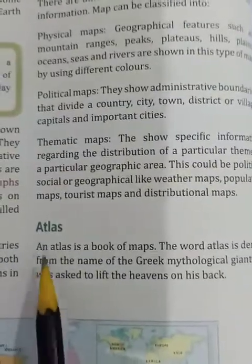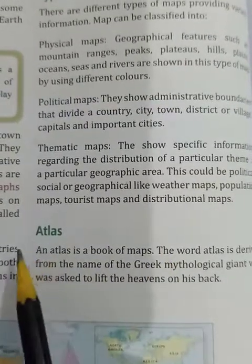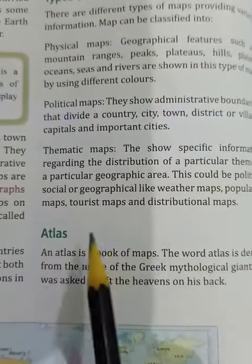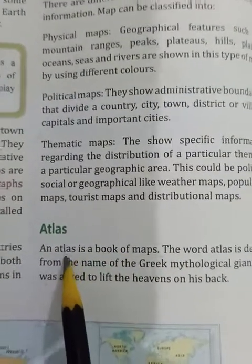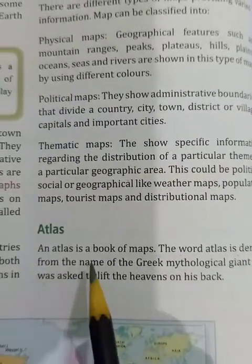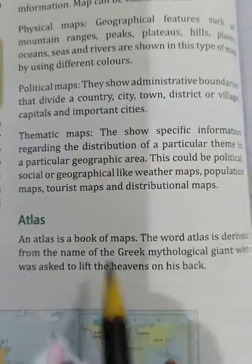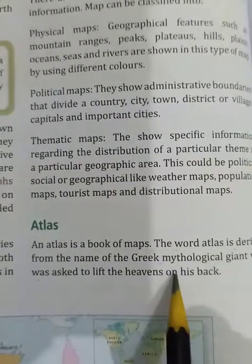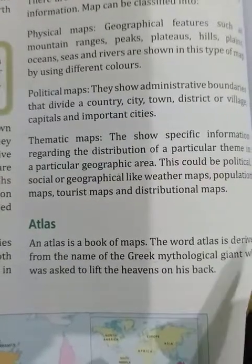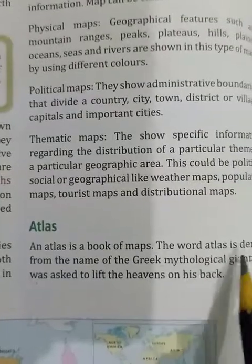So maps can be classified into three types: physical, political, and thematic maps. Now come to the next heading: Atlas. An atlas is a book of maps. The word Atlas is derived from the name of the Greek mythological figure who was asked to lift the heavens on his back.